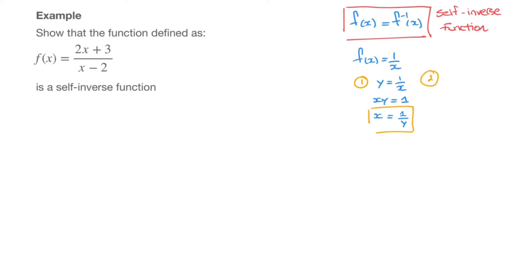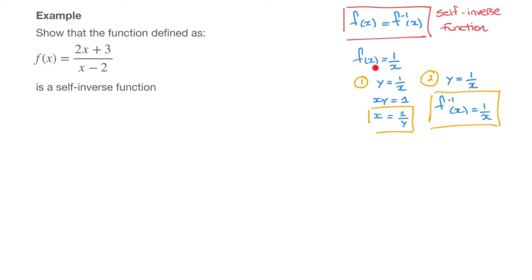I move on to step 2, and in step 2 I swap the x and the y and define the inverse function. Swapping x and y leads us to y equals 1 over x, and therefore the inverse function, inverse of f, equals 1 over x. We've found this function's inverse. Comparing it to the original function we started off with, these two functions are equal, and we say that f of x is a self-inverse function.